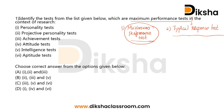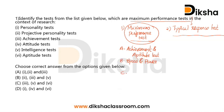Examples of maximum performance test, which aim to measure an individual's knowledge and abilities, are: achievement and aptitude test, speed and power test, and objective and subjective test. The first category, maximum performance test, is aimed at measuring one's performance, knowledge, and abilities. Examples are achievement and aptitude test, speed and power test, and objective and subjective test.